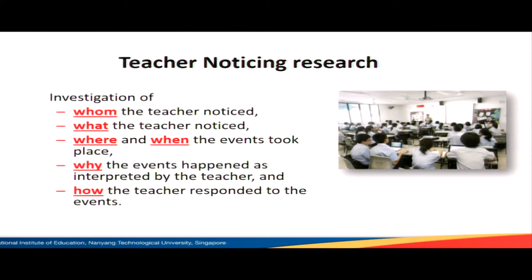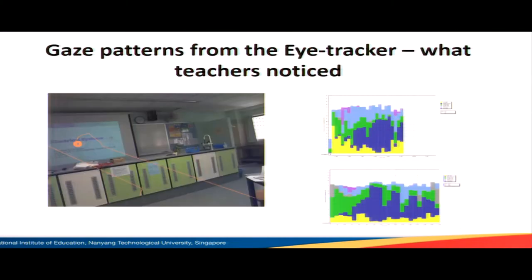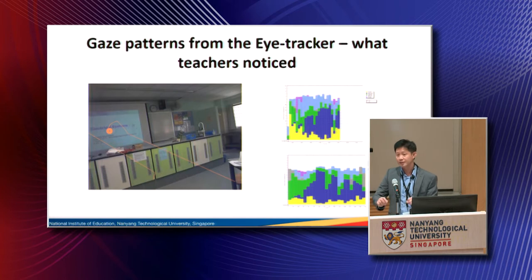Another research we are doing is teacher noticing research — what do teachers notice in the classroom? Who do they see? What do they notice? How do they react? We ask teachers to wear eye-tracking glasses, with one camera in front of the class and one behind. The gaze patterns reveal a lot about what teachers do and value. The first teacher looked a lot at the screen and the students' notes, scanning worksheets to see whether students completed them. The second teacher focused on the science equipment, and when interviewed, said it's important in a science lab to look at how students fix the equipment. You can see teachers' practices from data that would not have been possible before.